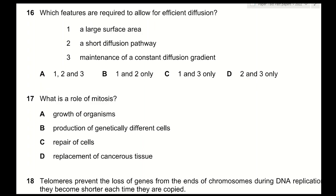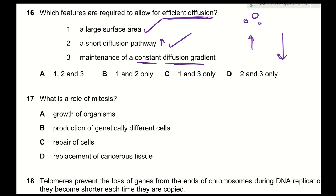Question 16: which features are required for efficient diffusion? 1 — a large surface area: increasing surface area increases the rate of diffusion — correct. 2 — a short diffusion pathway: if molecules travel a shorter distance, the rate increases — correct. 3 — maintenance of a constant diffusion gradient: if the gradient keeps altering, diffusion will not be efficient; a constant gradient is needed — correct. The answer is A (all three features).